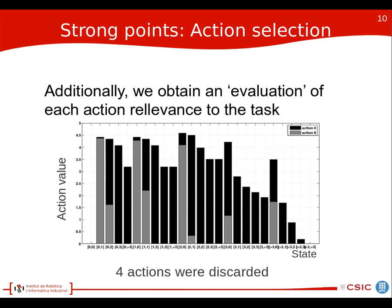Additionally, by design, the POMDP provides an expected long-term reward, which evaluates the relevance of each action towards the task. From the graph, we can see a comparison between action 0 and action 8. Since action 0 is better in every case, we can conclude that action 8 is irrelevant for the task. Using this method, four actions were discarded, allowing us to specialize on more suitable actions and ease the policy computation.